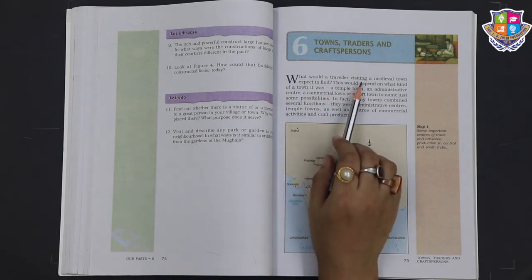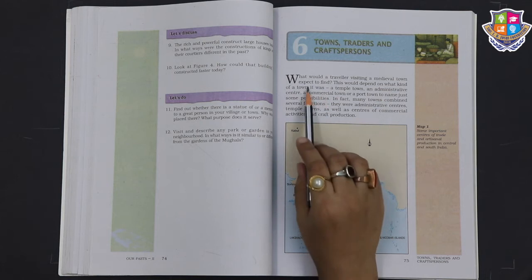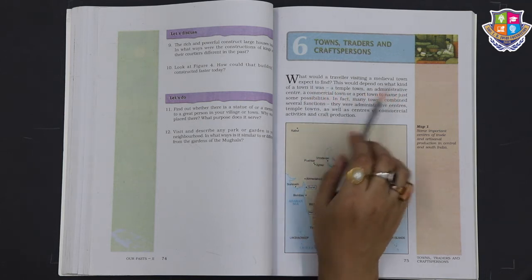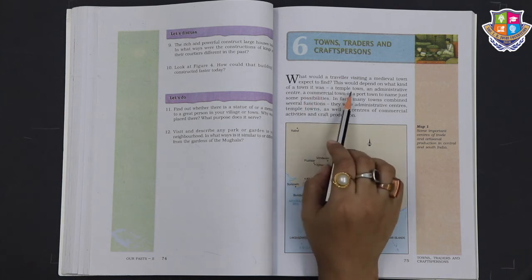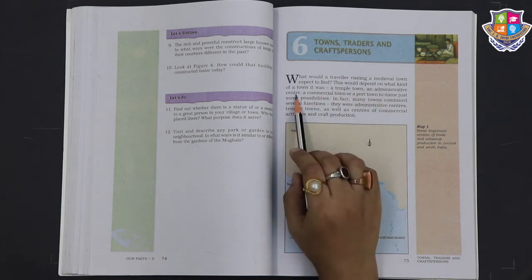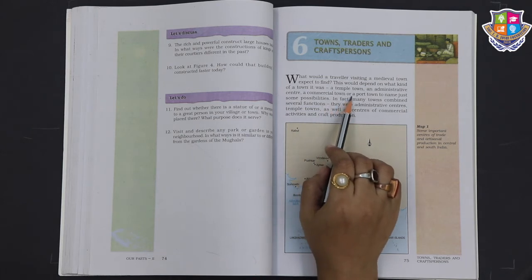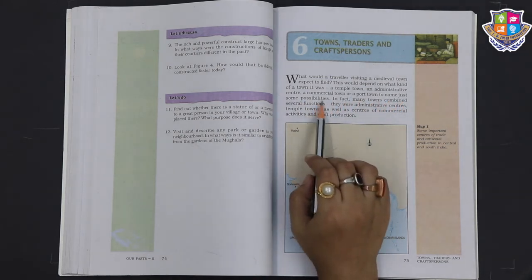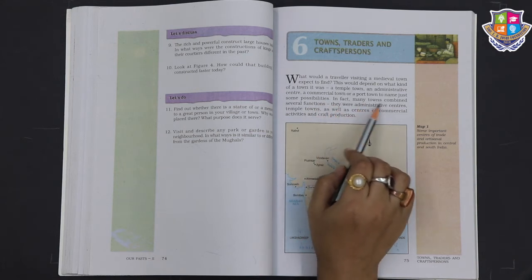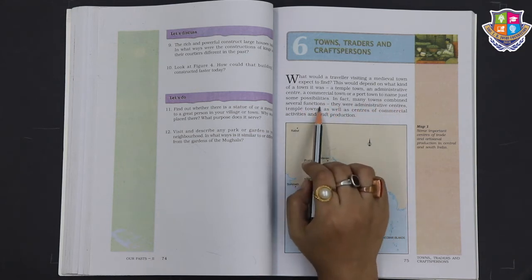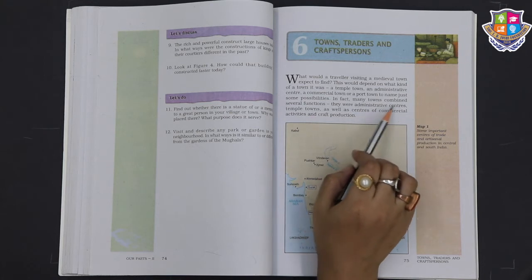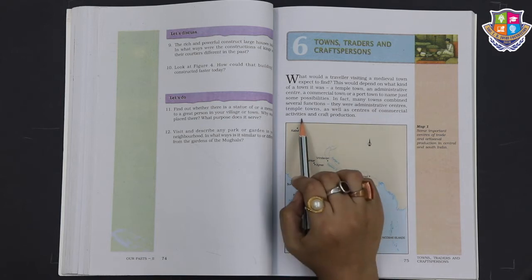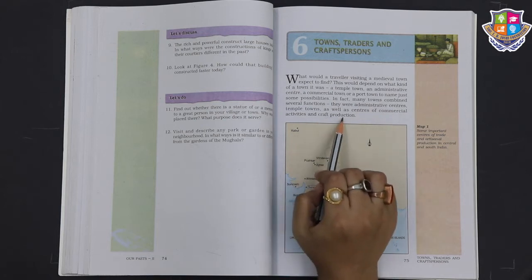What would a traveler visiting a medieval town expect to find? This would depend on what kind of town it was - a temple town, an administrative center, a commercial town or a port town, to name just some possibilities. In fact many towns combined several functions. They were administrative centers, temple towns as well as centers of commercial activities and crafts production.